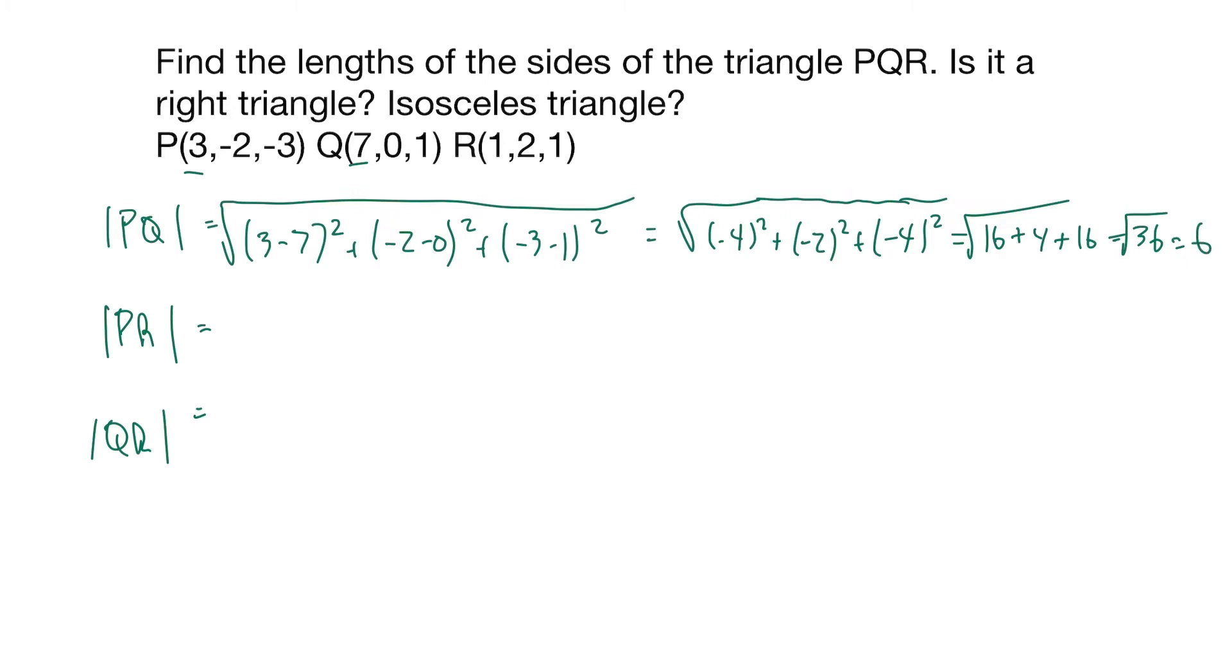P and R. Again, 3 minus 1 squared plus negative 2 minus 2 squared plus negative 3 minus 1. So you got 2 squared plus negative 4 squared, plus 4 plus 16 plus 16. And it's going to be the same thing as P and Q.